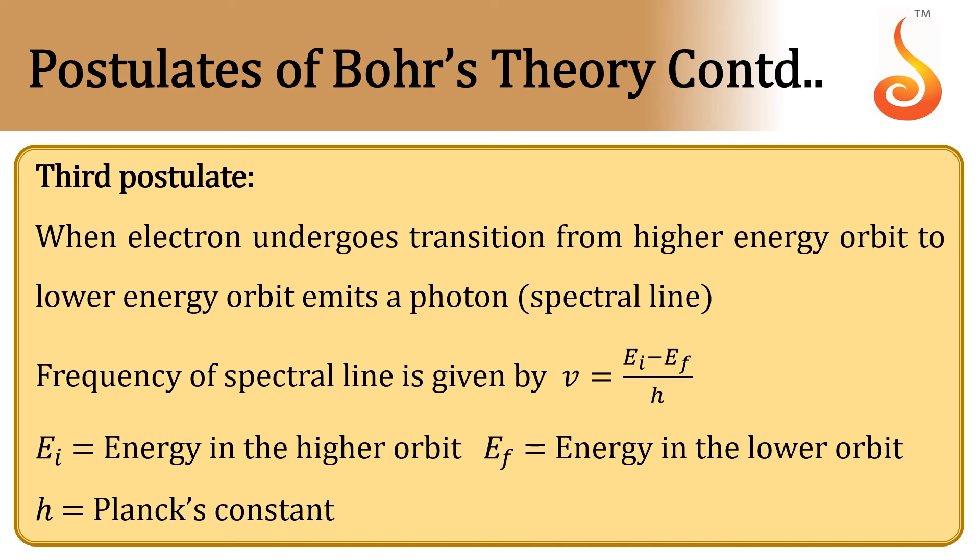The amount of energy that the electron loses will come out as a spectral line in the form of light. The difference in energy is equal to the energy of the light that comes out.